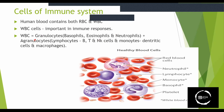White blood cells are divided mainly into granulocytes. Granulocytes are named for their granules. Granulocytes are three types: basophils, eosinophils, and neutrophils — these are the three structures of granulocytes.